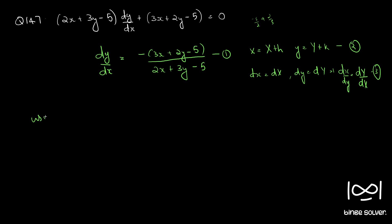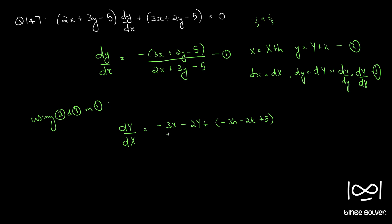Using equations 2 and 3 in equation 1, we have d capital Y by d capital X equal to minus 3 capital X minus 2 capital Y, with the constant terms giving plus minus 3H minus 2K plus 5 in the numerator, and 2 capital X plus 3 capital Y with 2H plus 3K minus 5 in the denominator. Call this equation 4.